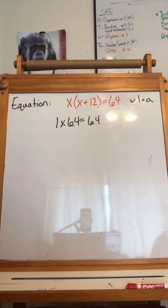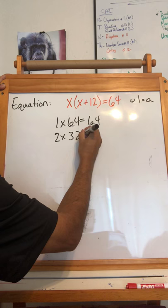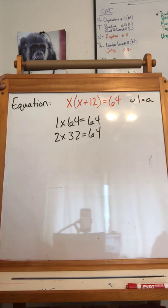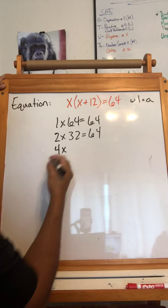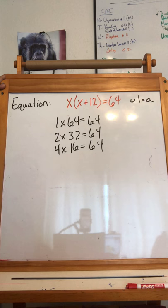2. 2 times what equals 64? 2 times 32, but that is a difference of 30. That's not my answer. 3 times nothing. I'm not going to get 64 if I'm multiplying by 3. I'm looking for a whole number, so I'm going to try 4. 4, and we already discussed from the previous ones, 4 times 16 equals 64.